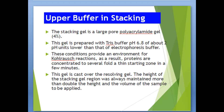The stacking gel is a large-pore polyacrylamide gel. It is prepared with Tris buffer at pH 6.8, which is about 2 pH units lower than that of the electrophoresis buffer. This condition provides an environment for Kohlrausch reactions, and as a result, proteins are concentrated several-fold into a thin starting zone in a few minutes. This gel is cast over the resolving gel, and the height of the stacking gel region is always maintained at more than double the height and volume of the sample to be applied.